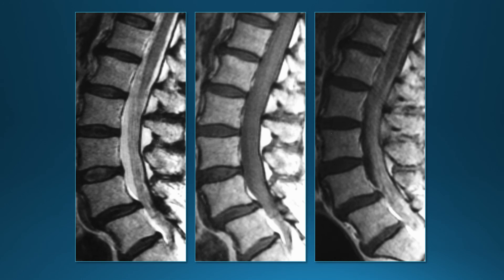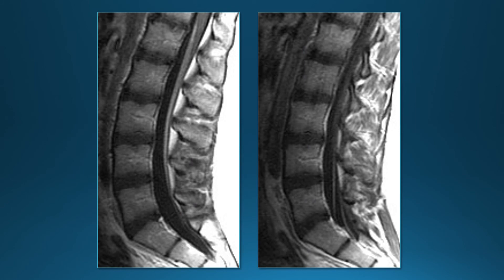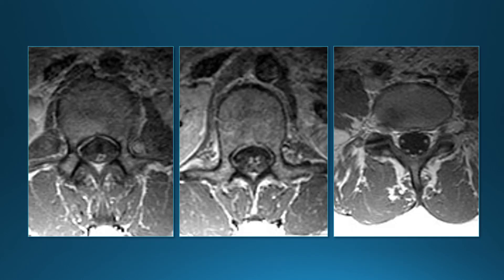Leptomeningeal disease can have a number of different appearances. In one patient, post-contrast images show enhancement of almost the entire subarachnoid space — the conus appears darker compared to the enhancing CSF on T1. Another pattern is more linear enhancement along nerve roots, which can be seen nicely on axial imaging showing the enhancing nerve roots.